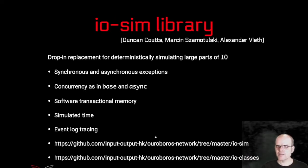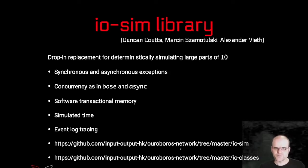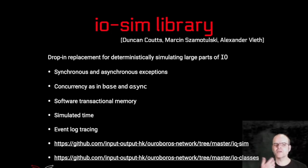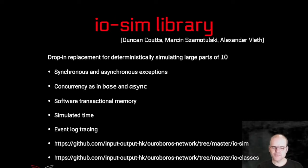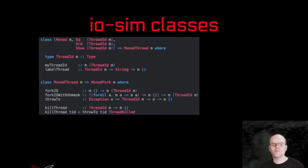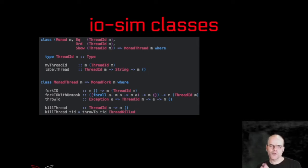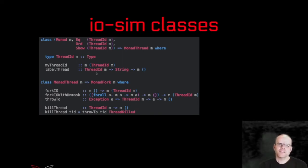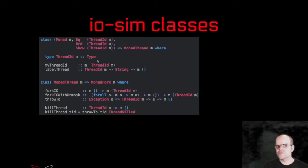It has an event log tracing mechanism so that you can analyze your runs and find exactly what's going wrong. You can find that library — not yet on Hackage — as part of the repository that holds the networking stack of Cardano, at the provided link. You can find the IOSim library itself, which is the simulator, and also a package called IOClasses. IOClasses is basically a type class-based wrapper around the IOSim library.